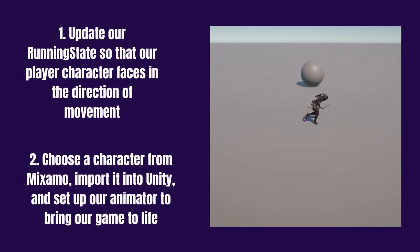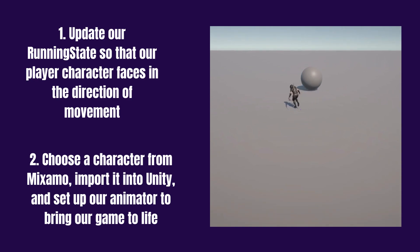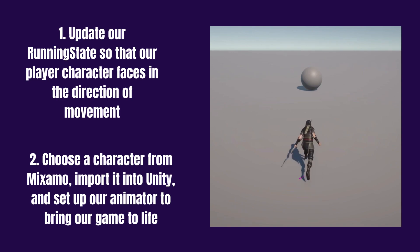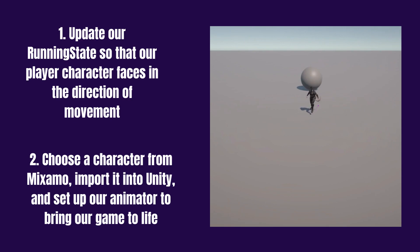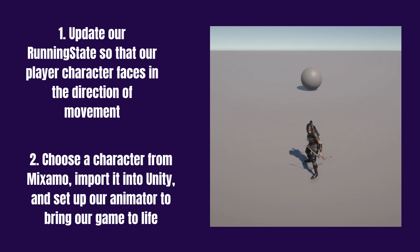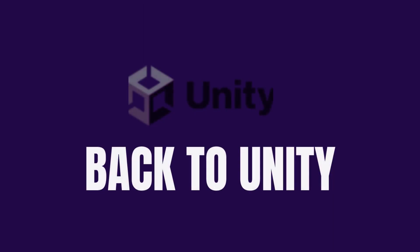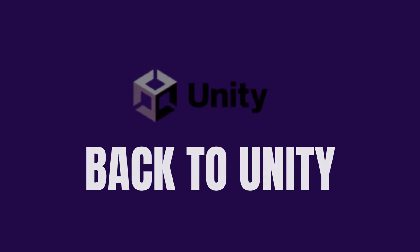Hello coding enthusiasts, welcome back to our channel. I hope you're ready for part 2 of our series on mastering player movement in Unity. In this session, we will be focusing on two main areas: firstly, we will update our running state so that our player character faces the direction of movement, and secondly, we're going to dive into Mixamo — a fantastic tool where we can download and import animations and even characters into our game. We'll choose our character, import it into Unity, and set up our animator. Let's dive straight in.